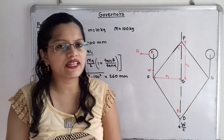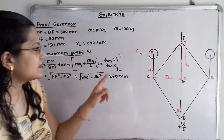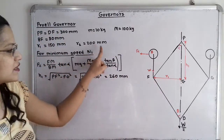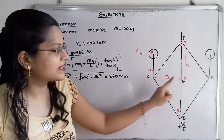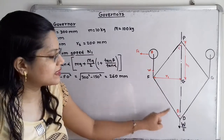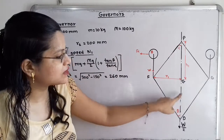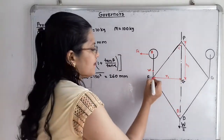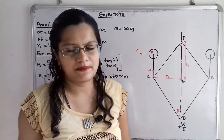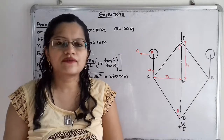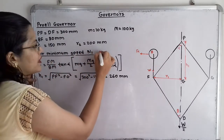The extension arms of the fly ball remain parallel to the spindle axis when R1 = 150 mm and R2 = 200 mm. For R1, point F is the end of the link. Drawing a horizontal line from F, its intersection with the spindle axis gives point G, so FG = R. When R = R1 = 150 mm, the governor rotates at minimum speed N1.